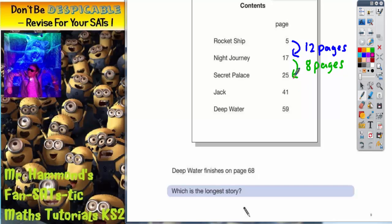Secret palace to jack is page 25 to page 41. Bit tricky to do that one in my head. If I can't do one of these in my head I could just do a column method at the side. So 1 take away 5 I can't do, kind of 1 back over. 11 take away 5 is 6, 3 take away 2 is 1. So Secret palace must be 16 pages long.